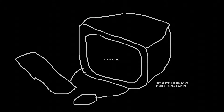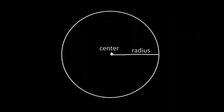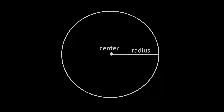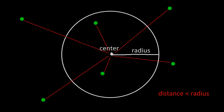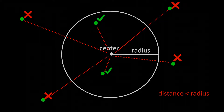You have a bunch of points and a circle, and you pose the question to your computer: which points are in the circle? Well, a circle is just the set of points one radius from its center, so we need to calculate the distances of all points from the circle's center and only choose the ones which have a distance smaller than the radius.